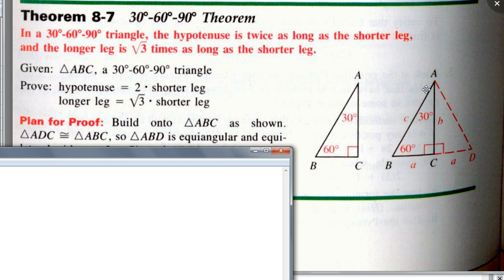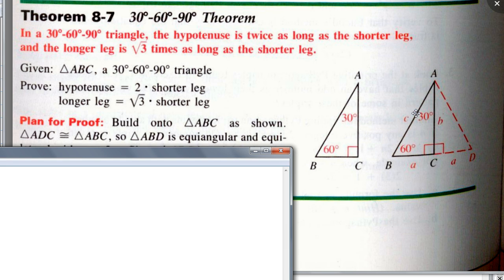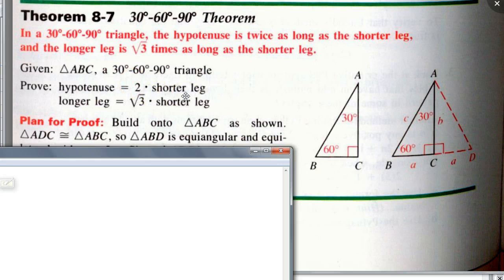What kind of triangle is this? If this angle is 60 degrees, guess what angle D is — also 60 degrees, because those are corresponding angles. And what about angle BAD, the whole thing? If this part is 30, then the combined angle is 60. So you have 60-60-60 — it's an equilateral triangle! What do you know about equilateral triangles? All sides are congruent. So AB is twice A — the hypotenuse is twice the leg.